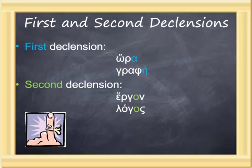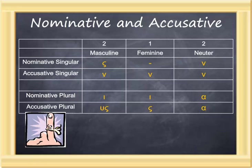To these stems the case endings are added. For the nominative singular in the second declension: sigma; in the first declension: nothing; and in the second declension neuter: nu. For the accusative singular, all examples add nu to the stem. In the nominative plural, iota and iota are added to masculine and feminine first and second declension nouns, and alpha is added to the second declension neuters. The case ending for the accusative plural is upsilon-sigma in the masculine second declension, sigma in the first declension, and alpha in the second declension neuter.